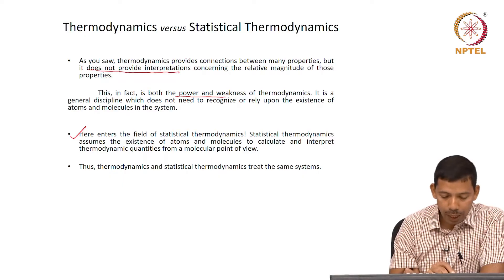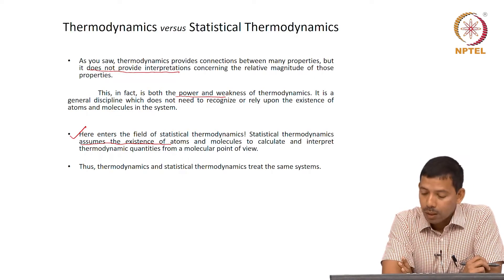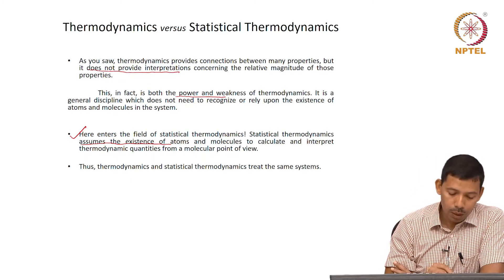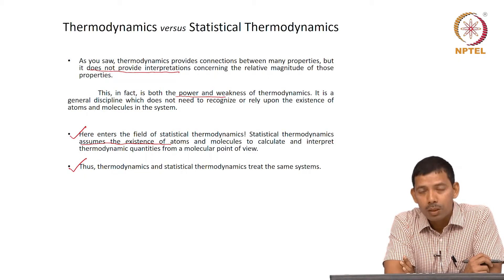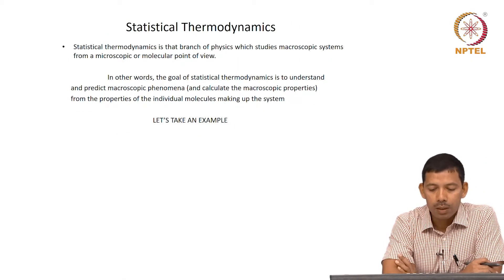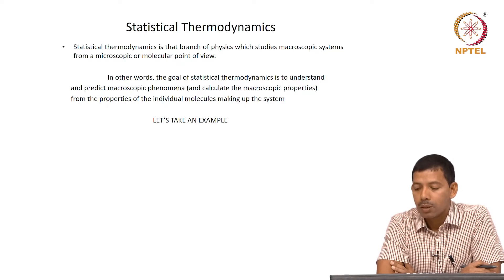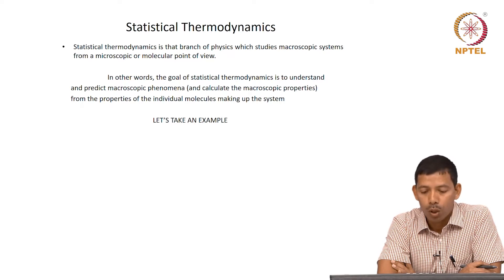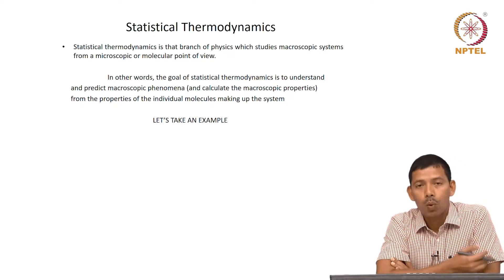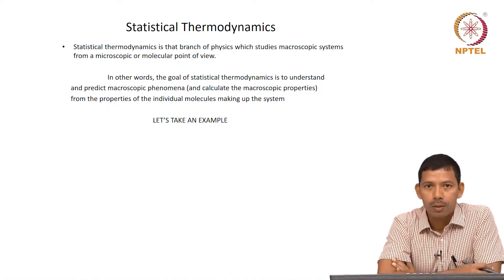Here enters statistical thermodynamics. Statistical thermodynamics assumes that the system is composed of molecules and atoms, and it calculates and interprets the thermodynamic quantities from the molecular point of view. Thus, thermodynamics and statistical thermodynamics treat the same systems but their goals are different. In a nutshell, statistical thermodynamics is that branch of physics which studies macroscopic systems from a microscopic or molecular point of view.